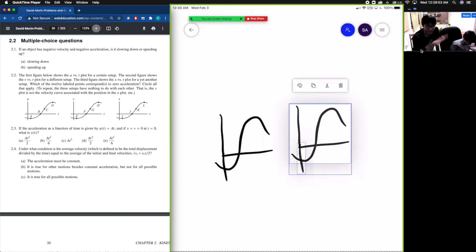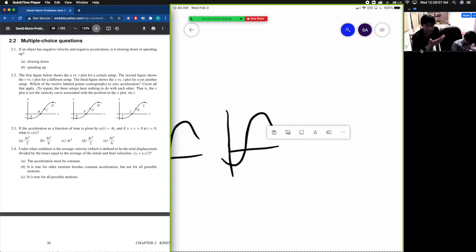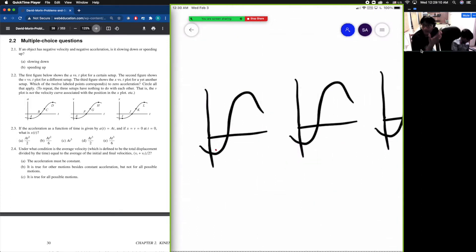To repeat, the three setups have nothing to do with each other. That is, the V plot is not the velocity curve associated with the position in the X plot. So basically, we're trying to find where we have zero acceleration in which of the 12 points.